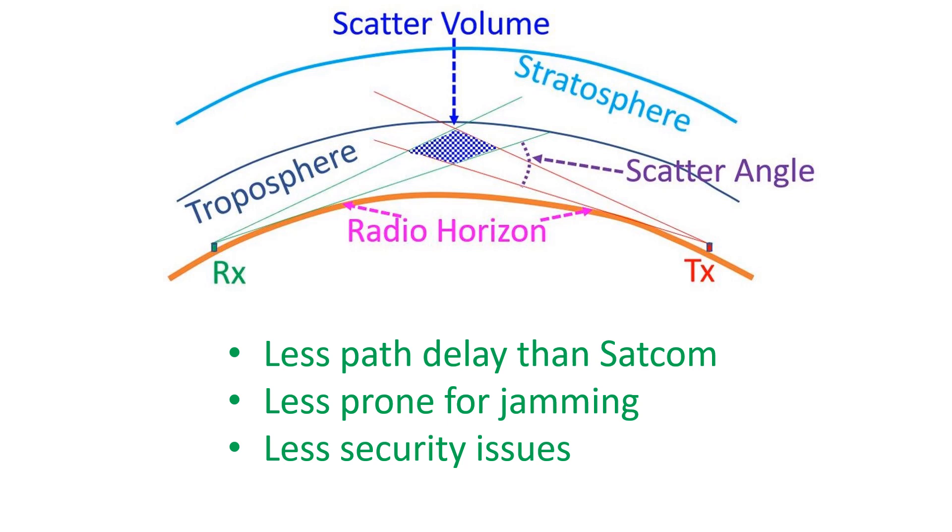One advantage of tropospheric scatter over satellite communication is the lower delay. Satellite communications could have a delay of 500 ms while tropospheric scatter communication delays are only a few ms.